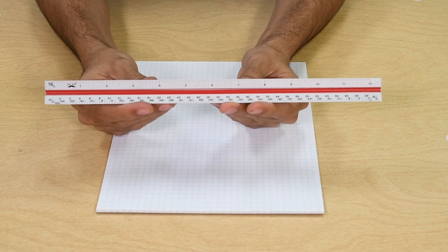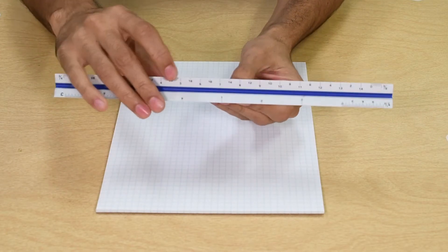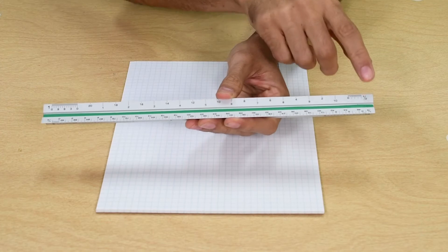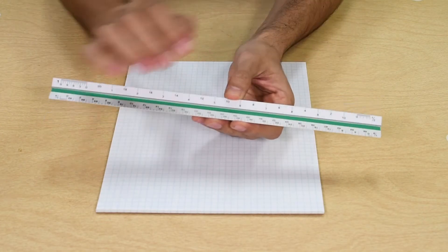As you see, architect scales have six sides that make 12 different scales. Scales basically convert lengths on paper into feet.